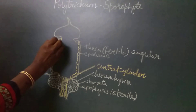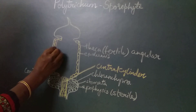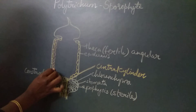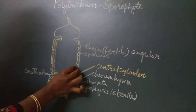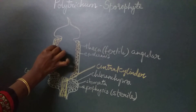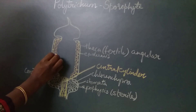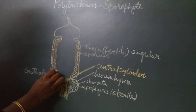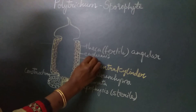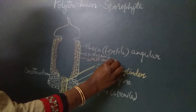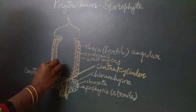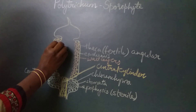Inner to the epidermis, we find two to three layers of cells which are parenchymatous in nature — thin-walled cells that contain chlorophyll or chloroplasts. These are the wall layers. Inner to the wall layer there is an airspace, otherwise also called the lacuna.